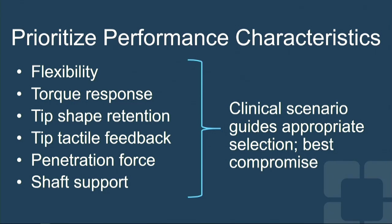There are several performance characteristics built into wires. We can torque wires, we can push wires — the rest is part of the engineering of the wire. Familiarity with these performance characteristics is key to selecting the correct wire. There's flexibility, torque response, the shape of the tip, whether it can be retained, tactile feedback, penetration force, and shaft support. All of these things can be selected for if you're familiar with how a wire is made.